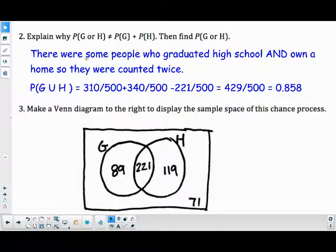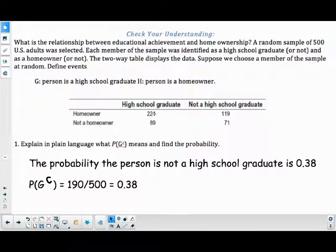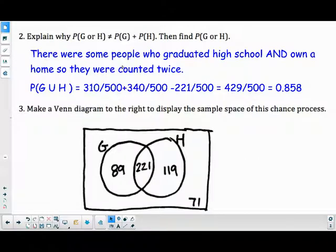Explain why the probability of graduate or homeowner is not equal to the probability of graduate plus the probability of homeowner, but then find it. So in order to just add up the two probabilities, those two events need to be mutually exclusive, meaning they can't happen at the same time. But we have people who are both high school graduates and homeowners, so we can't just add those two separate probabilities because we would double count these 221 people that are both.